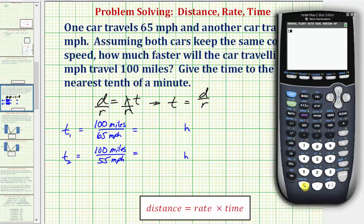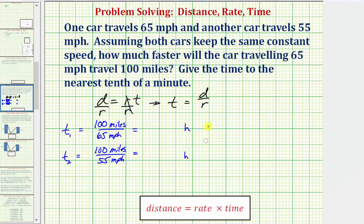So first we have 100 divided by 65 to four decimal places. This will be approximately 1.5385 and then we have 100 divided by 55 which would be approximately 1.8182. Let's go ahead and record these. So again 1.5385 hours and 1.8182 hours.